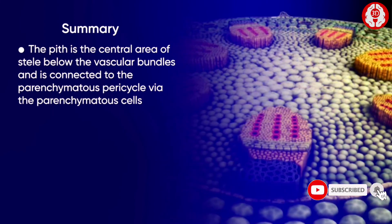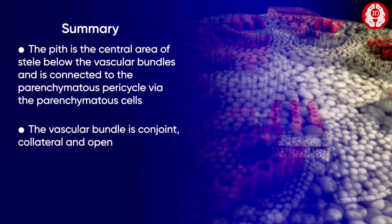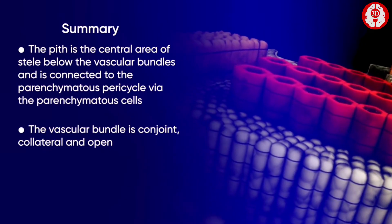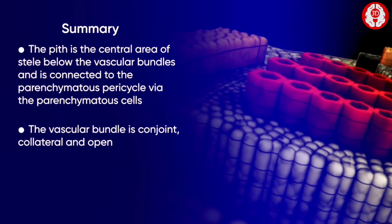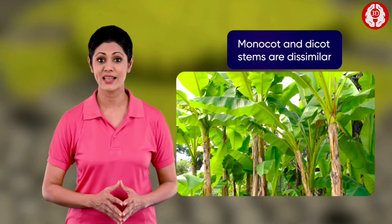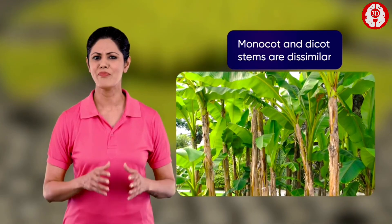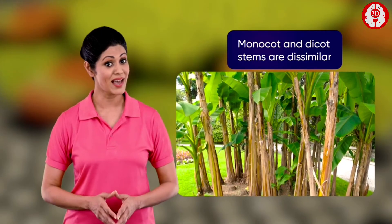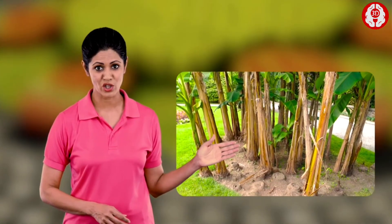The central area of the stele below the vascular bundles is the pith. Parenchymatous cells connect the pith and the parenchymatous pericycle. The vascular bundle in the dicot stem is conjoint, collateral, and open. While monocot and dicot stems may have many similar layers, they have differences as well. Observe the internal structure of a monocot stem to know more about the differences, and stay tuned.